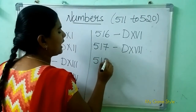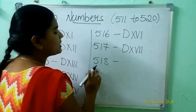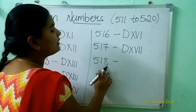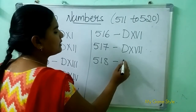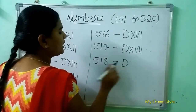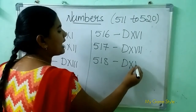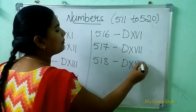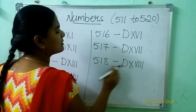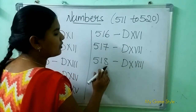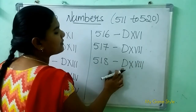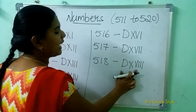518 means 518. D is 500. XVIII is 18. So this means 518.